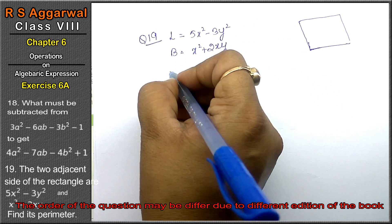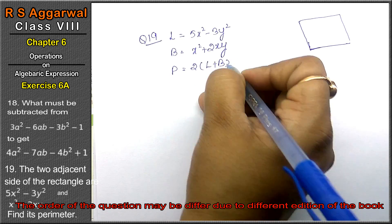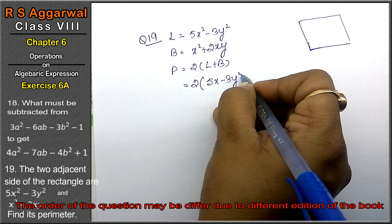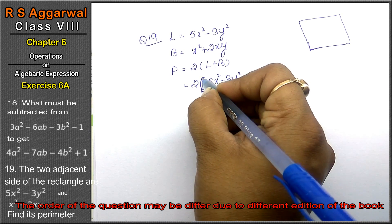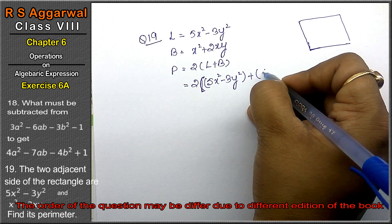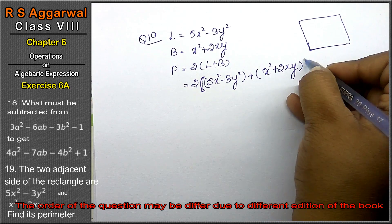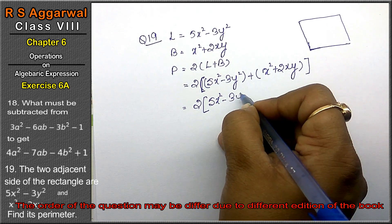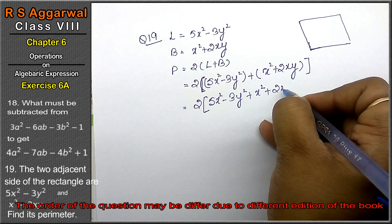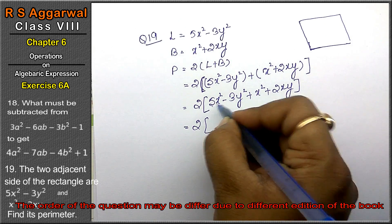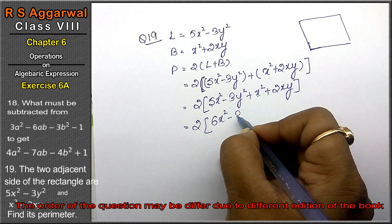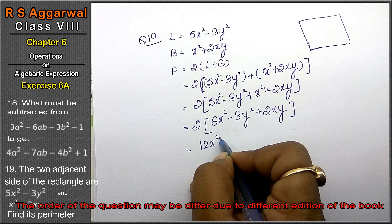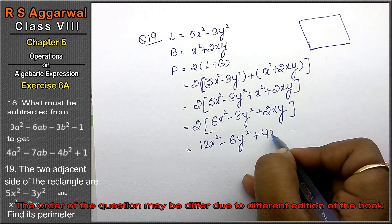The perimeter of a rectangle is 2(length + breadth). The dimensions are (5x² - 3y²) and (x² + 2xy). So perimeter = 2 × (5x² - 3y² + x² + 2xy) = 2 × (6x² - 3y² + 2xy) = 12x² - 6y² + 4xy is the answer.